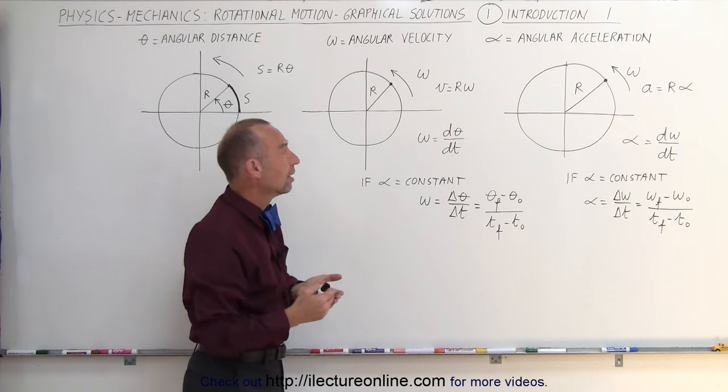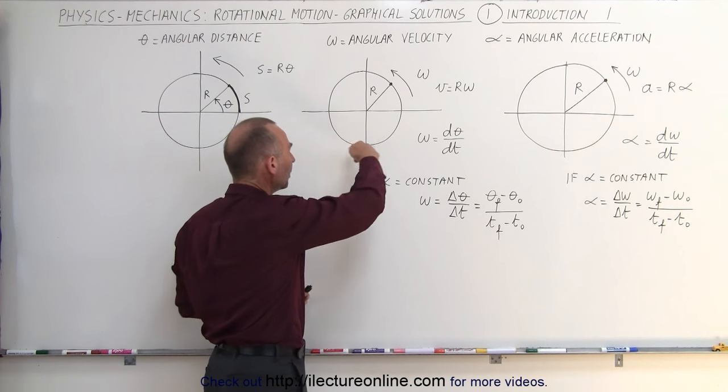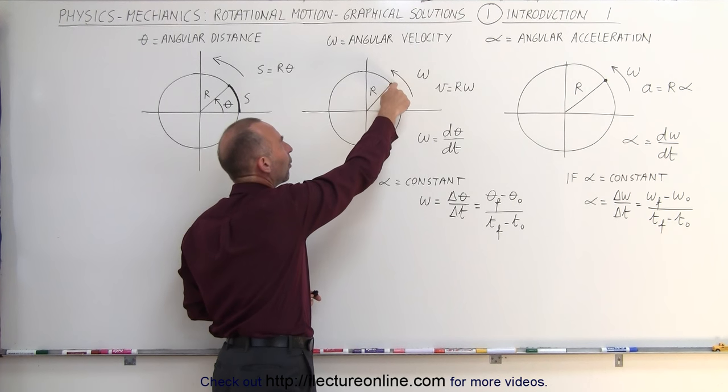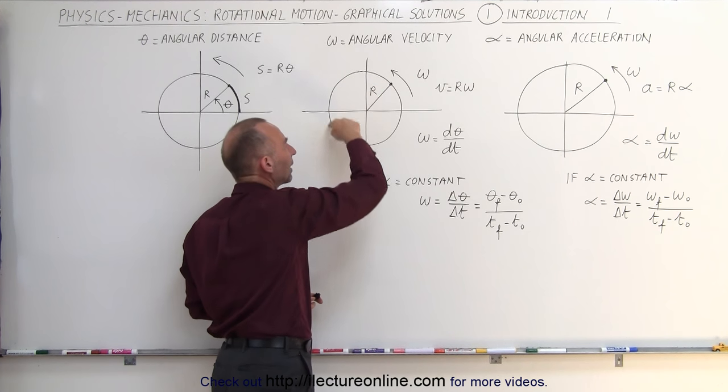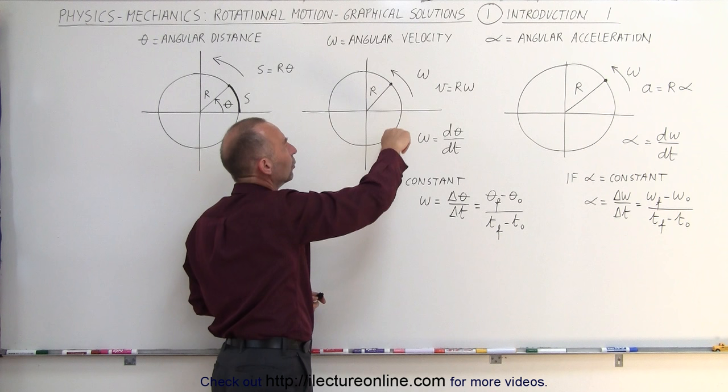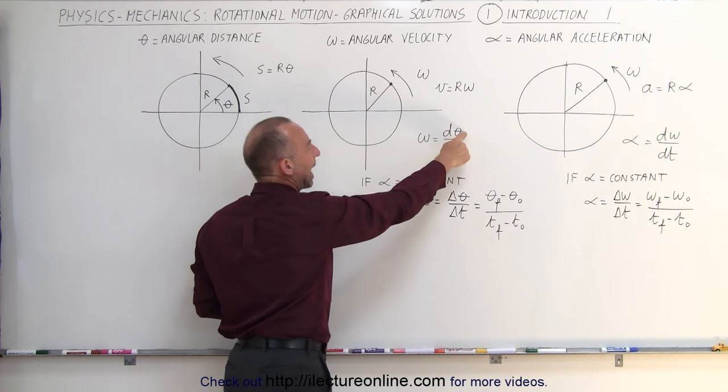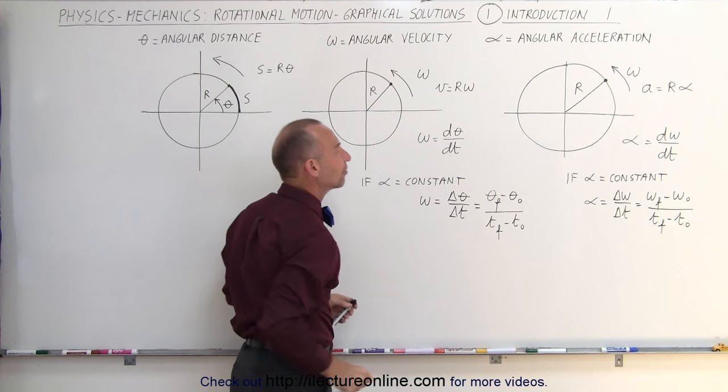Here we're going to talk about the angular velocity. Assuming that the disc is rotating or a point on the circle is rotating at a constant speed, notice that the angular velocity can be defined as the amount of angle that it's covered in the amount of time.